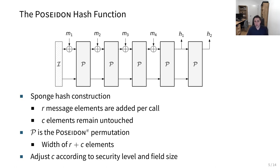If we have this permutation, the Poseidon π permutation, we can very easily build a hash function, which is the Poseidon hash function. Essentially, this is a very classical sponge hash construction. We basically add our message elements in each call, and the c capacity elements remain untouched.